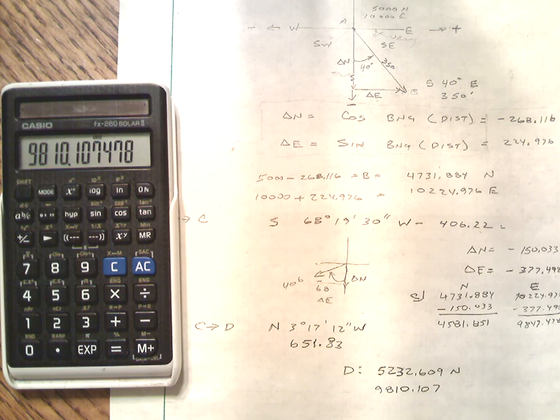Okay, so I took a couple of minutes. I took the cosine times 651 got the delta north. Added it to the previous northing. Got the new northing. Took 3, 17, 12. Took the sine of that. Times 651.83. I've got to remember that that's a west. That's going to become a negative. And I would subtract that then from 9847.478. Come up with 9810.07 for the easting of coordinate D.